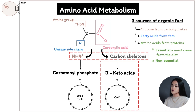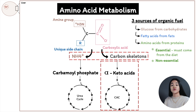So there are two types of amino acids: essential and non-essential. Examples of essential amino acids are histidine, isoleucine, and leucine. Examples of non-essential are alanine, glutamate, and aspartate. Essential amino acids must come from the diet.